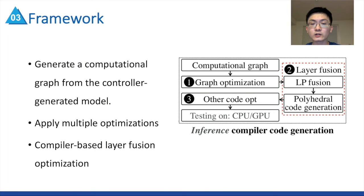The compiler code generation process includes three steps. First, generate a computational graph from controller-generated model and apply multiple optimizations on this graph. Second, employ a novel compiler-based layer fusion optimization to further improve execution performance. This plays a key role in achieving better hardware efficiency.